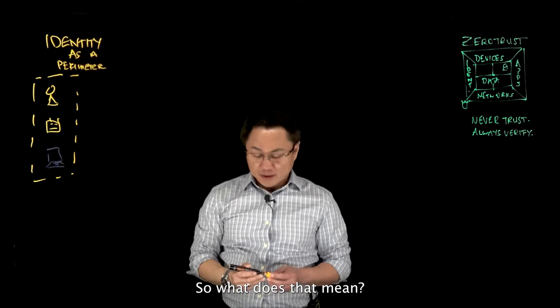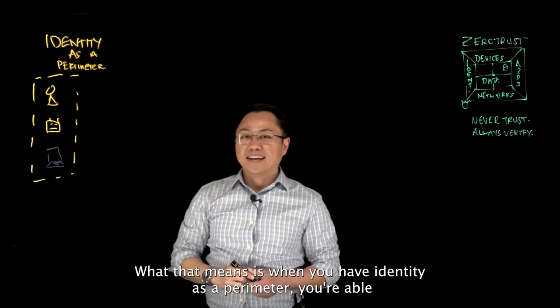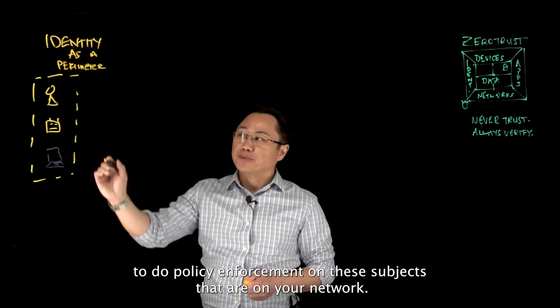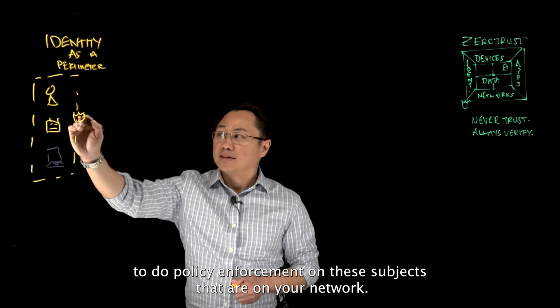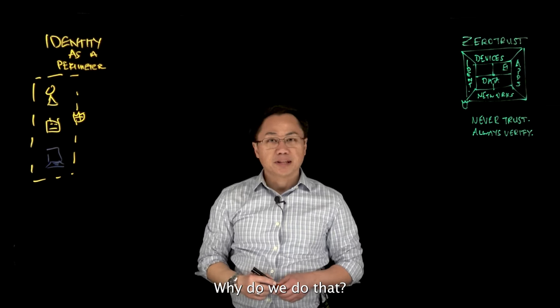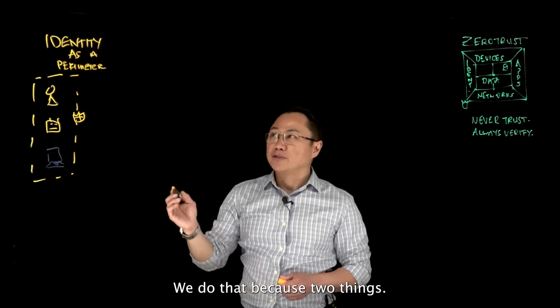So what does that mean? When you have identity as a perimeter, you're able to do policy enforcement on these subjects that are on your network. And why do we do that? We do that because a few things.